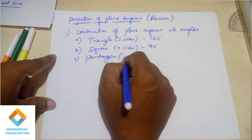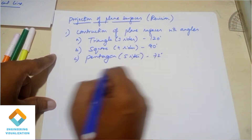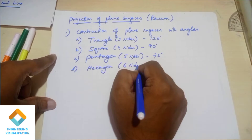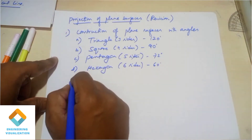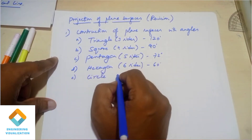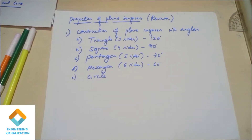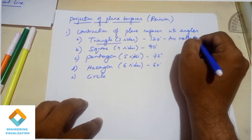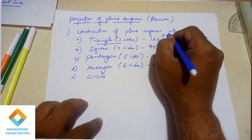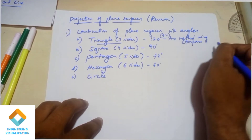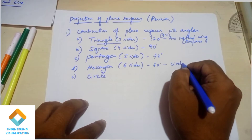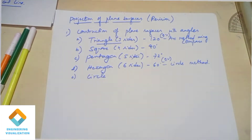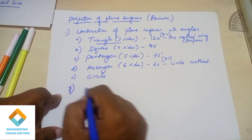Third point is pentagon - pentagon has 5 sides, and you have to use the external angle of 72 degrees. Hexagon has 6 sides - use the angle method with 60 degree angle. Finally, circle construction is very easy. For triangle arc method, use a compass with dimensions. For hexagon arc method, first draw a circle and then divide it.